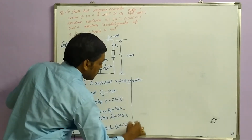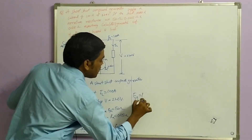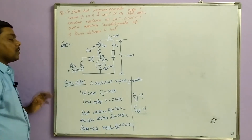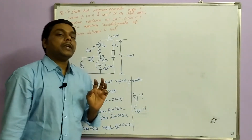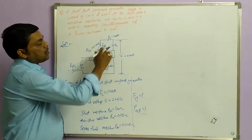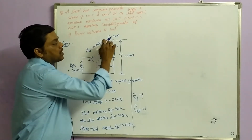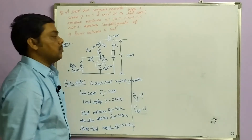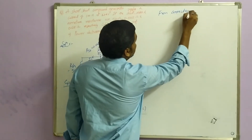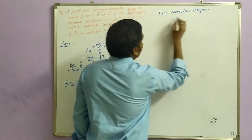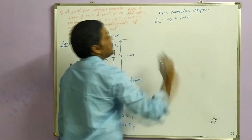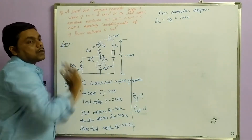We have to calculate the generated EMF and also the power output. From the connection diagram, we observe that series current and load current are both the same. From the connection diagram: IL is equal to ISE, which is equal to 100 amperes. Now the series current is determined.